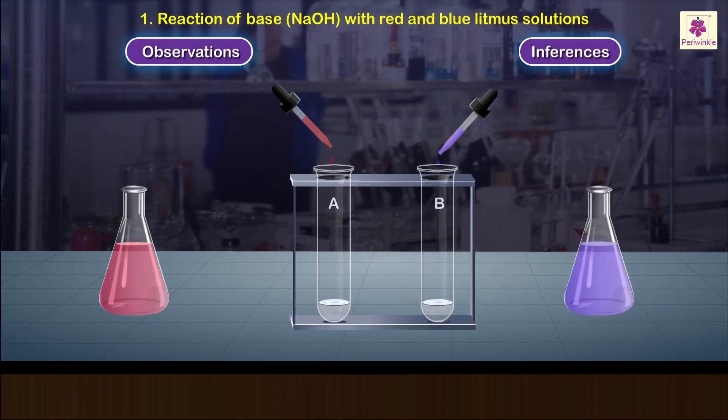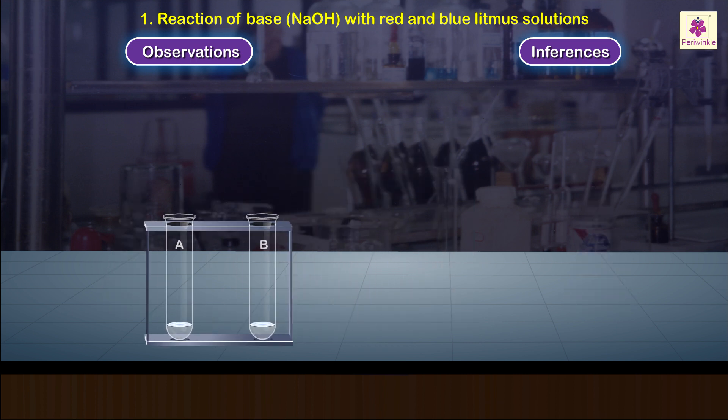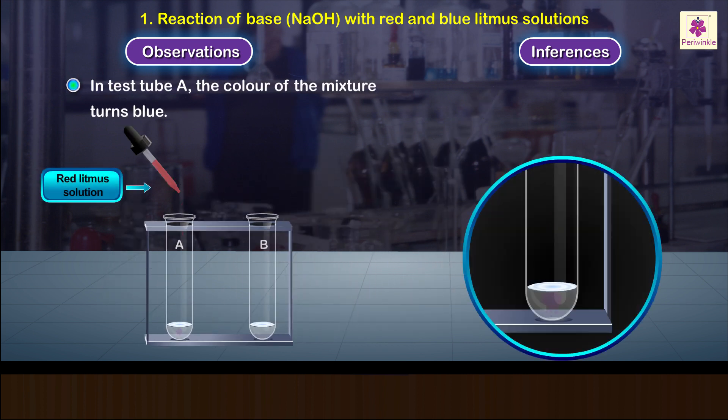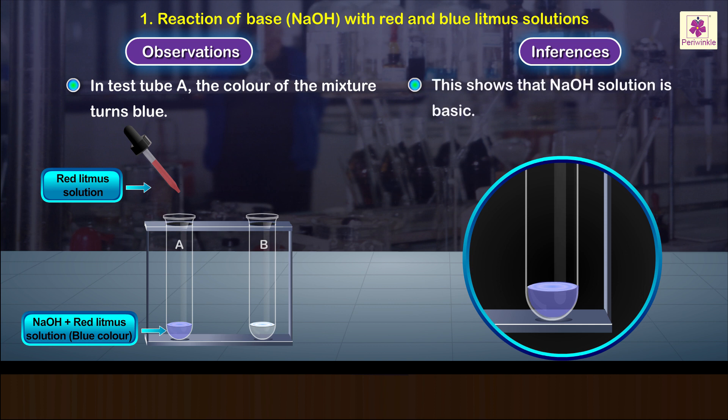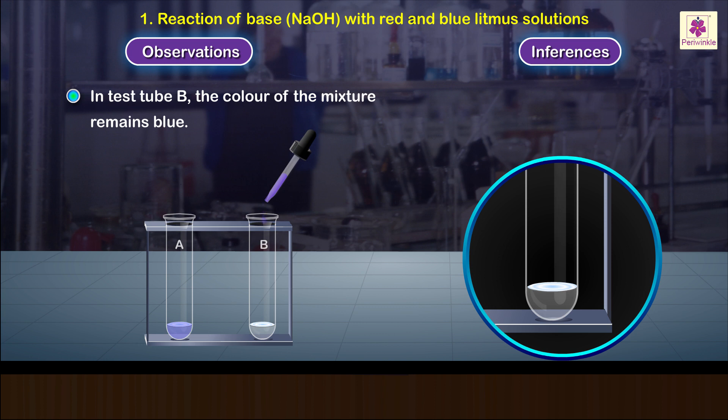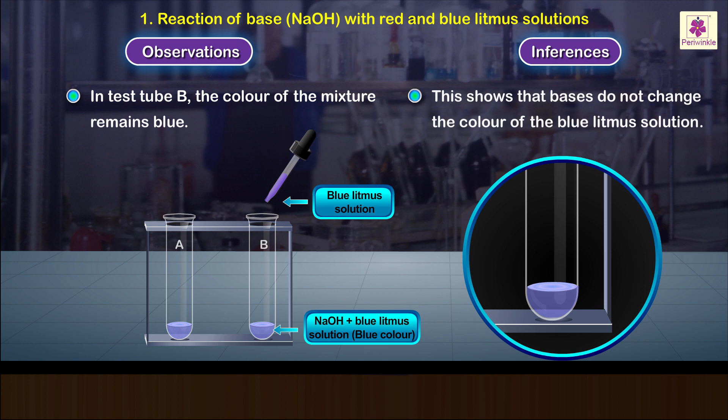Observations and inferences: In test tube A, the color of the mixture turns blue. This shows that sodium hydroxide solution is basic. In test tube B, the color of the mixture remains blue. This shows that bases do not change the color of the blue litmus solution.